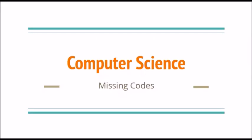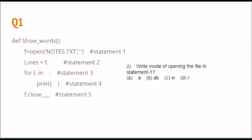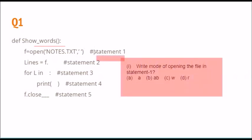In this video we will be seeing the missing code for the upcoming MCQ based Term 1 Semester 1 examination of Computer Science. In question number one we have a function named show_words — the name says we need to show words, although the entire paragraph will be given to us. We need to fill statement one, which is a blank where we need to select something to open the file.